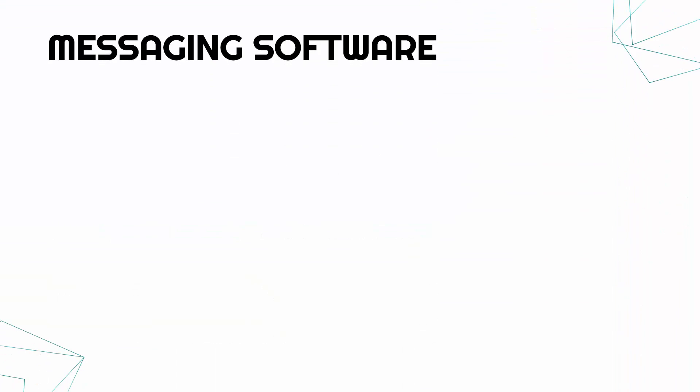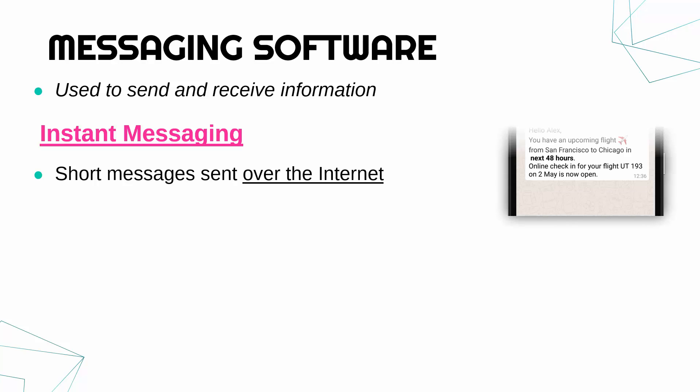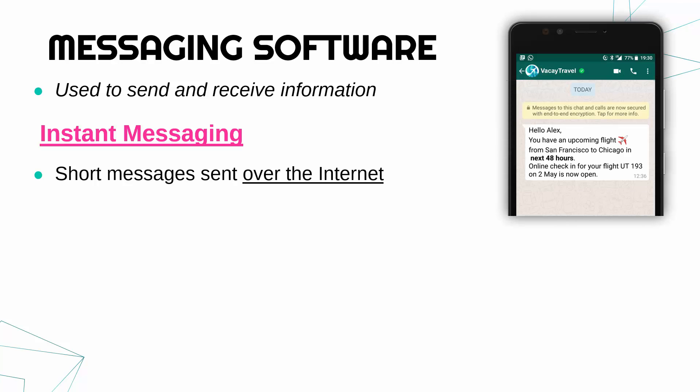We're looking at different types of messaging software — programs which enable you to send and receive information. These are obviously quite varied; in this video we'll focus on ones which are mostly text-based. First of all, instant messaging is really popular nowadays. It's been around for a long time but certainly wasn't nearly as big when I was growing up as it is now. These are short messages sent over the internet — something like WhatsApp is an example. You're not sending essays to people.